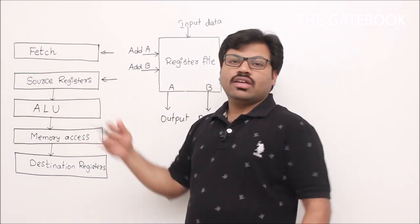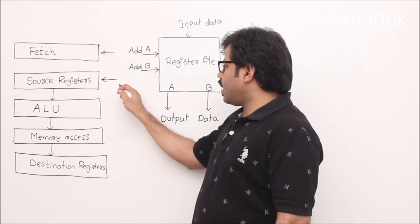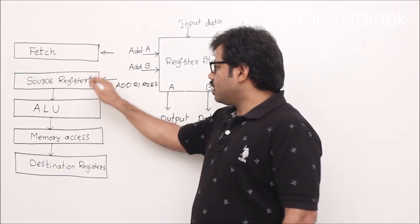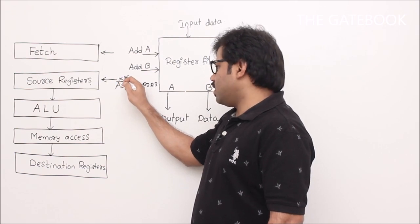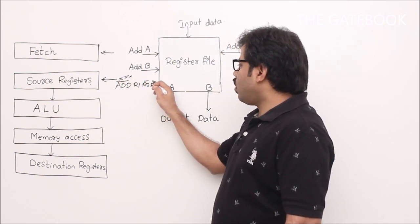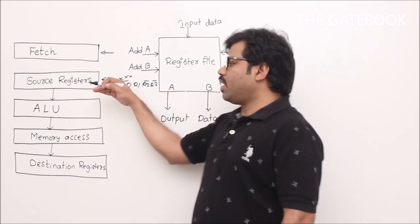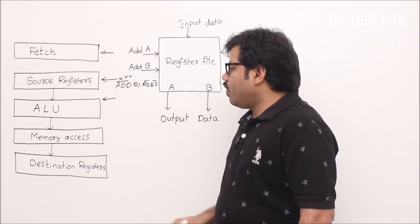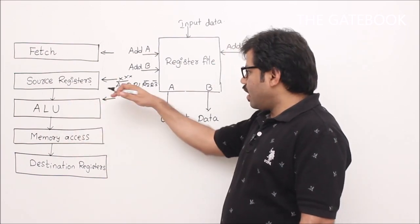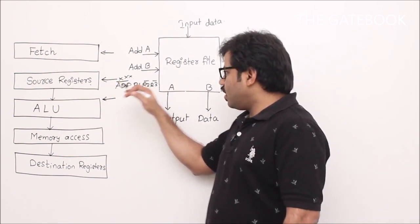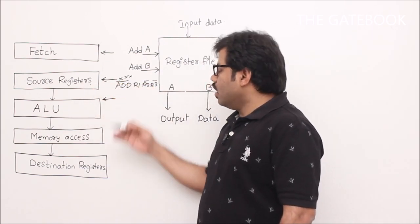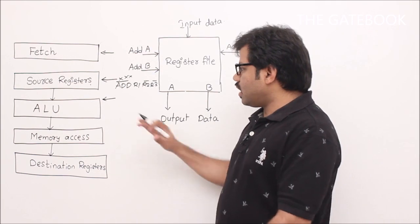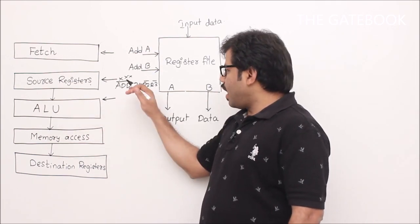After decoding, we read the registers. For example, if the instruction is ADD R1, R2, R3, then in this stage I understand it is an add instruction and I read R2 and R3 register values into some temporary registers. In the third stage, I will be doing the required arithmetic. Since it is an arithmetic instruction like addition, the R2 and R3 values are already read, so those values will be added in the ALU.